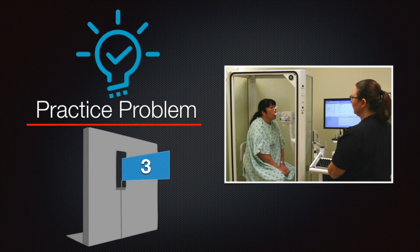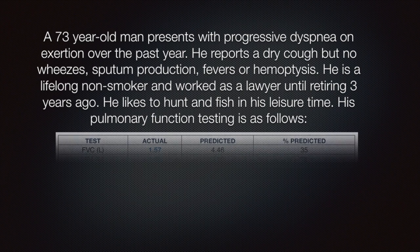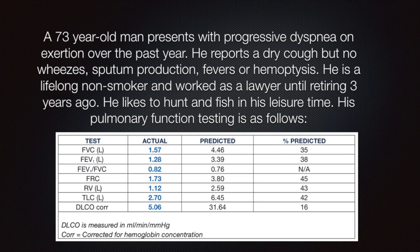Practice problem 3. A 73-year-old man presents with progressive dyspnea on exertion over the past year. He reports a dry cough but no mucus, sputum production, fevers, or hemoptysis. He is a lifelong non-smoker and worked as a lawyer until retiring 3 years ago. He likes to hunt and fish in his leisure time. His PFT reports are given as follows. Going back to the history, there is a history of recent onset of progressive dyspnea and dry cough. Risk factors: lifelong non-smoker, fair enough. His profession-wise, nothing much to mention.